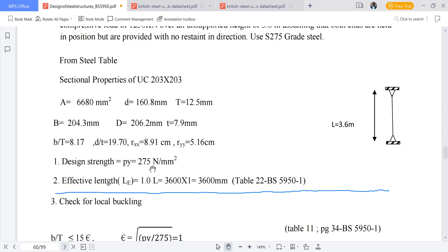That is why we are adopting a value of 275 newtons per millimeter squared. Then effective length, based on Table 22 and the support conditions or end condition of our universal steel column, you'll find that effective length is given by one times the actual length, which is 3600 millimeters.